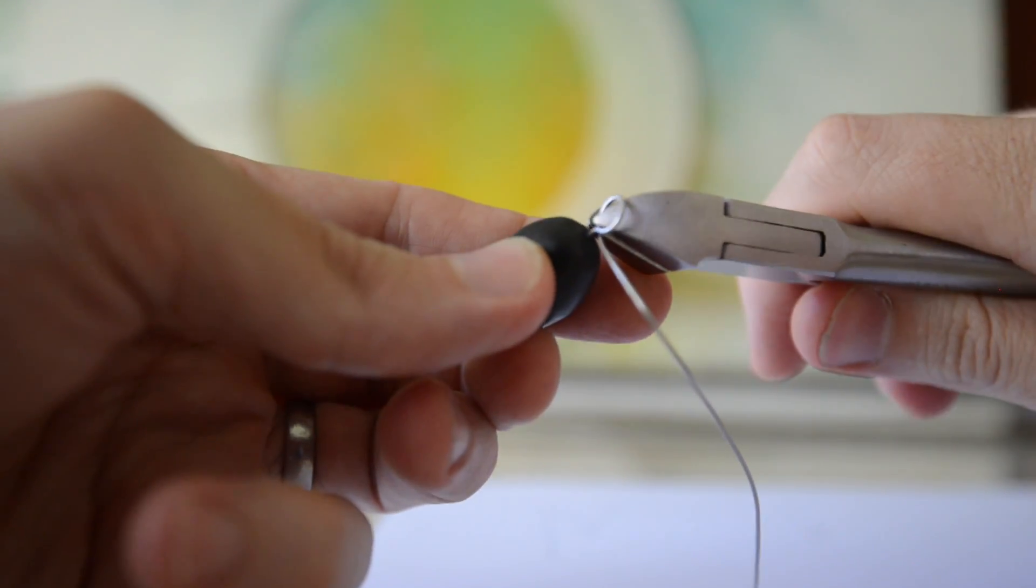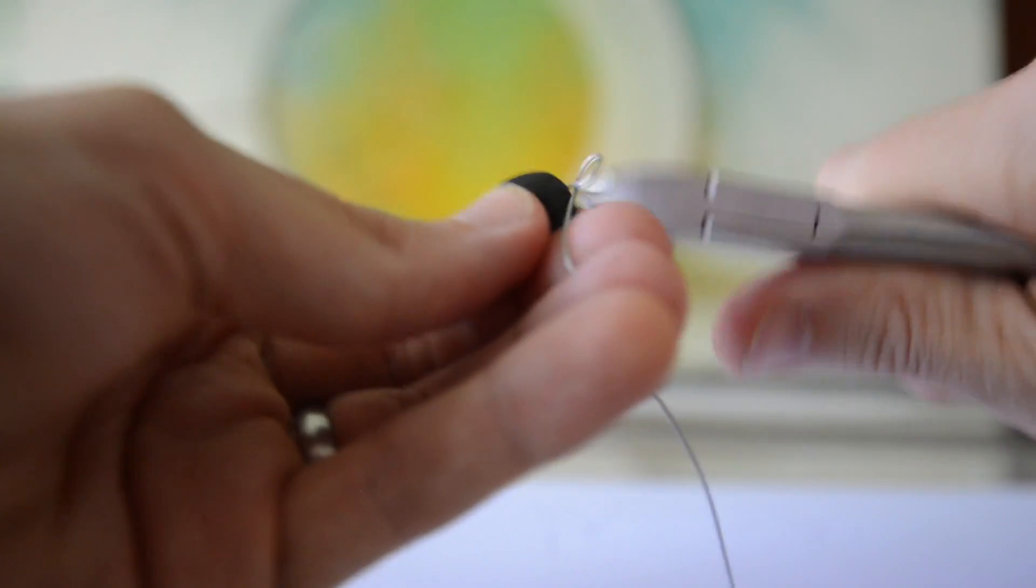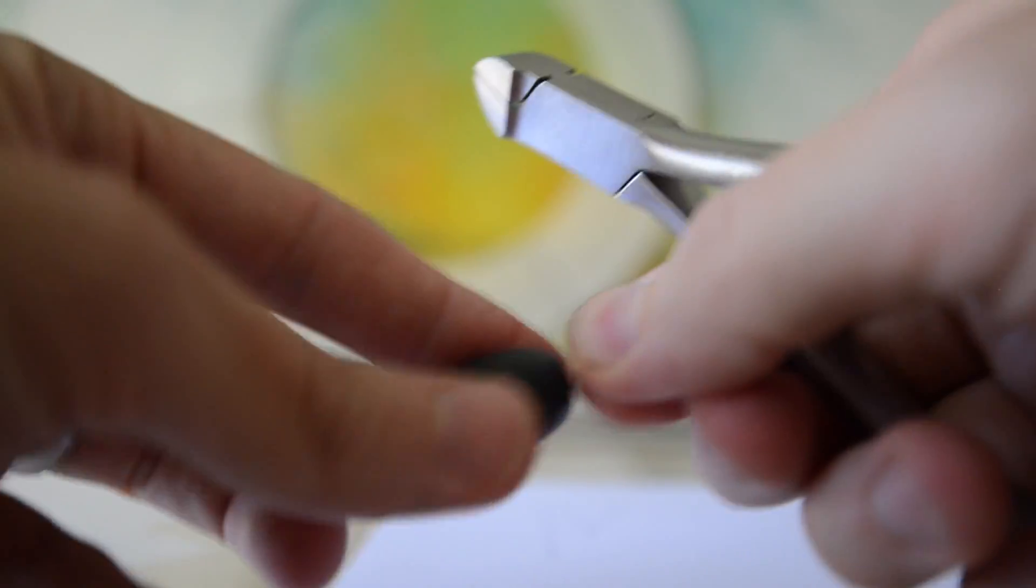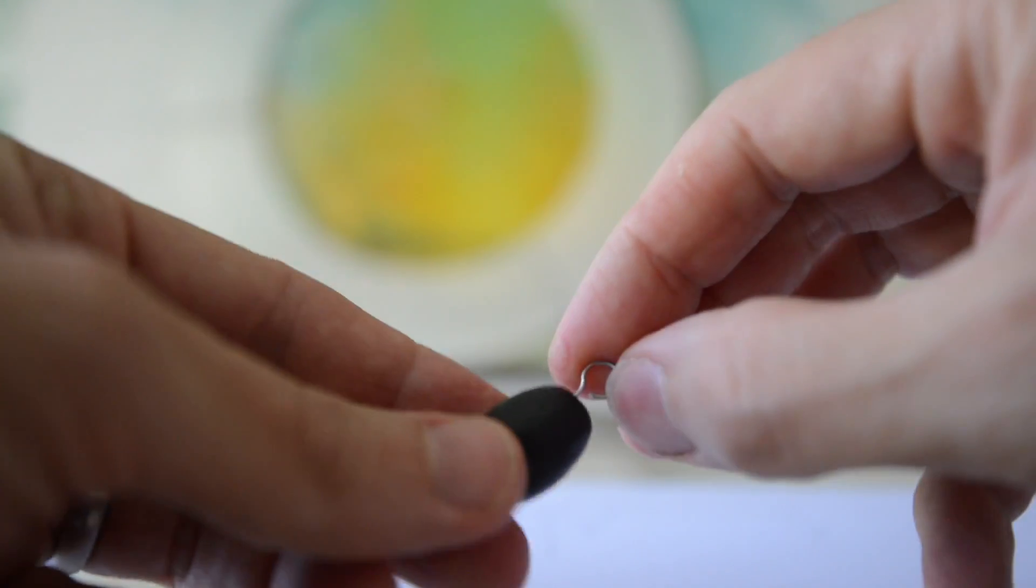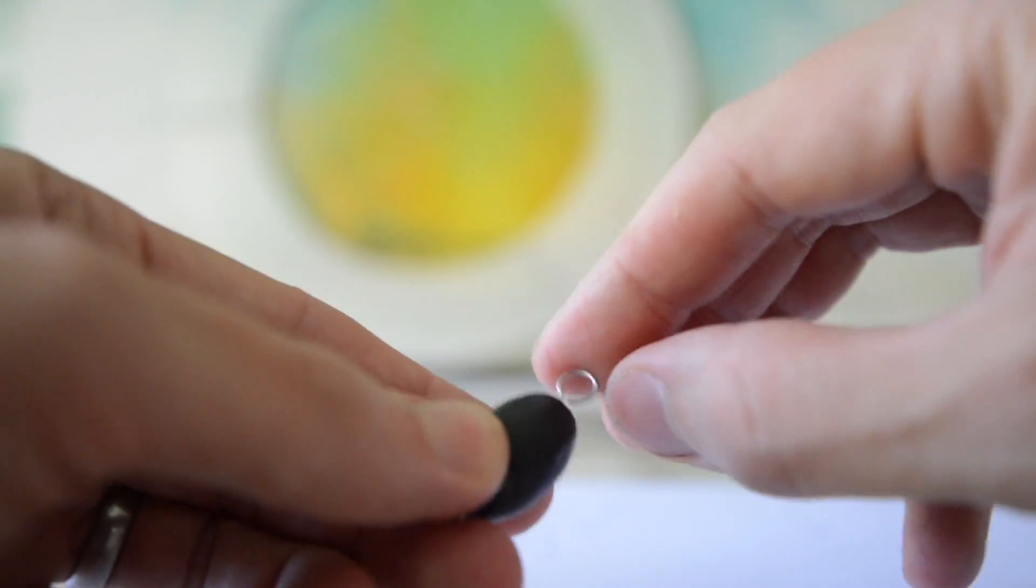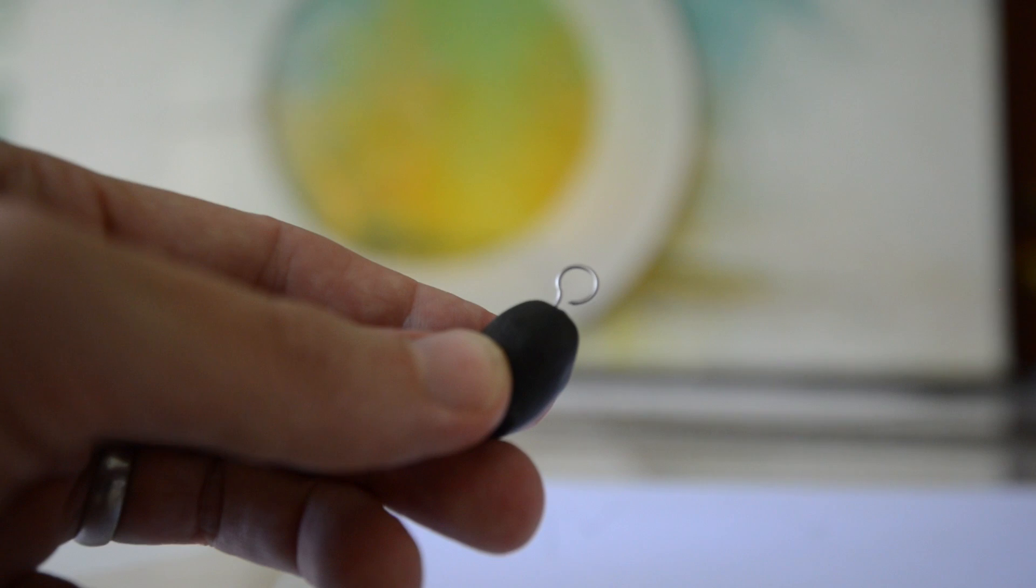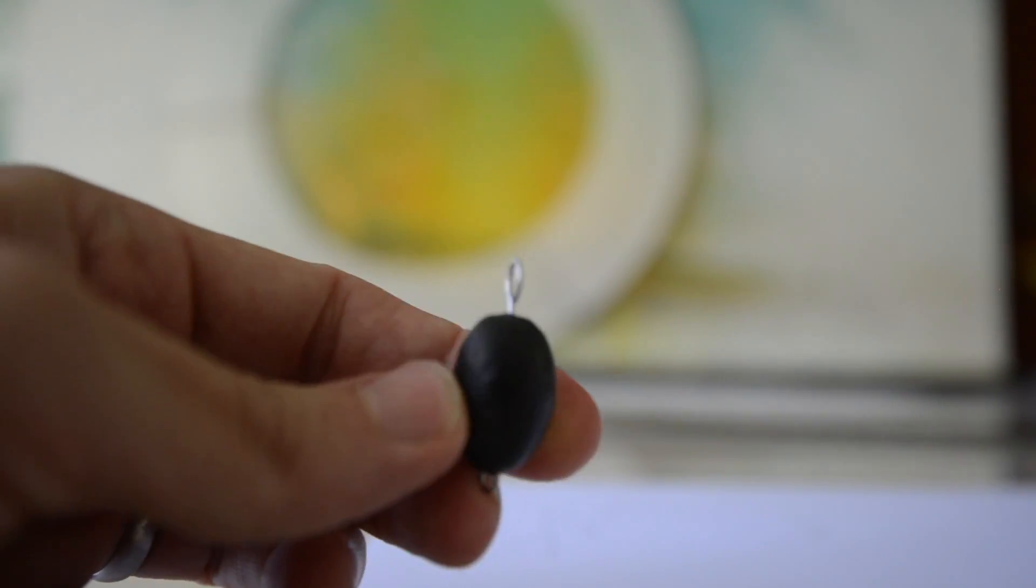Then we're just going to trim that off. I don't close this in case I need to change it. You can leave a little gap there and make it more of a hook, and that way if you need to change out the weight on your line for a different amount of weight it's real easy and you don't have to reroute the line.